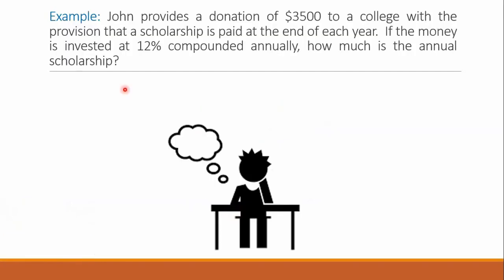Let us see this example. John provides a donation of $3,500 to a college with the provision that a scholarship is paid at the end of each year. If the money is invested at 12% compounded annually, how much is the annual scholarship?